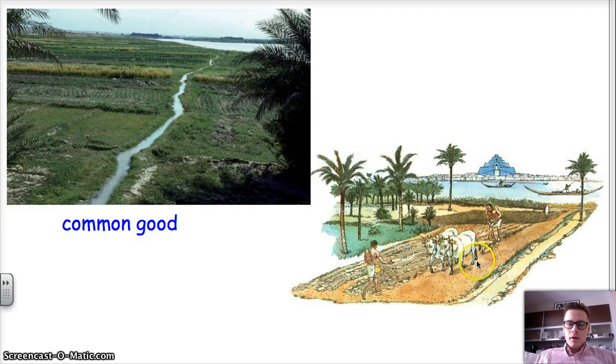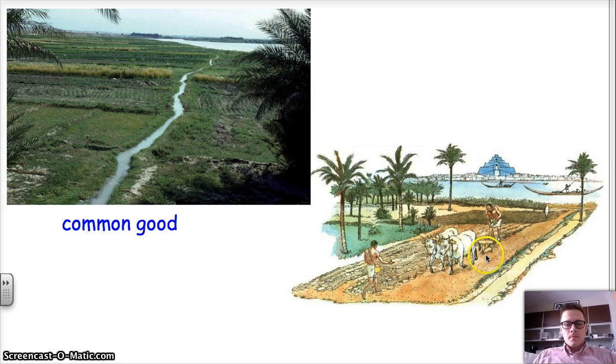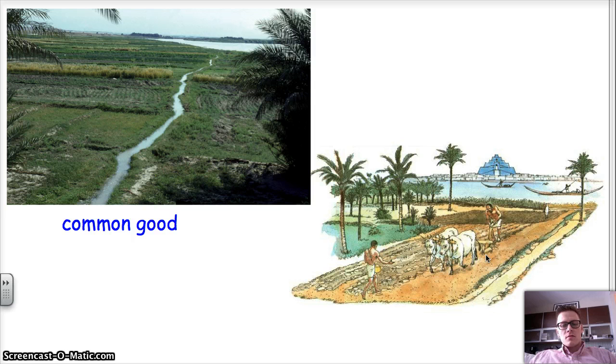But this would have been a later plow because plows originally were something that humans had to drag across the field. Basically, it's this wooden contraption with a blade on the end. Initially, it would have had a stone blade at the end.